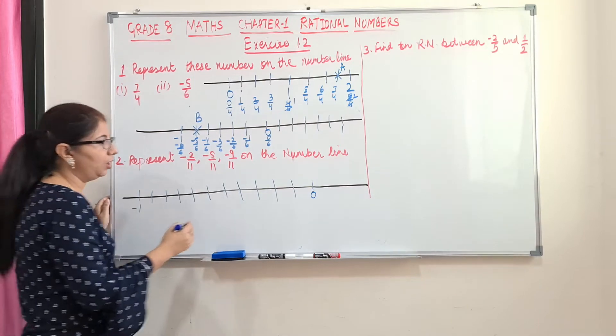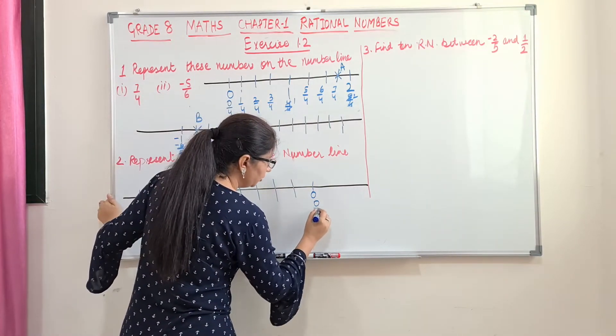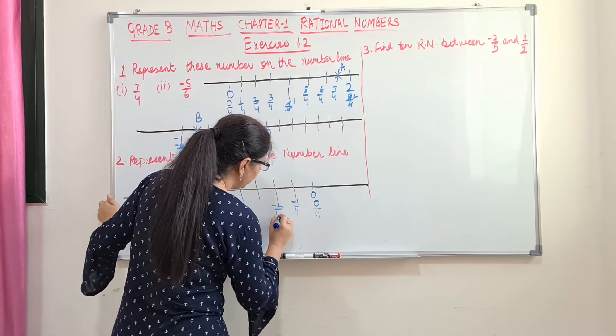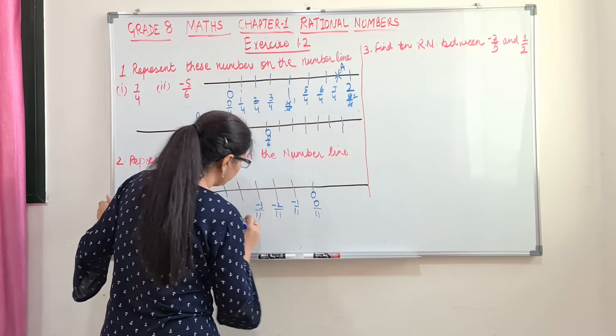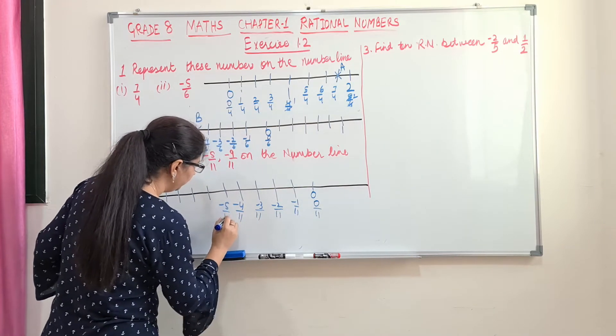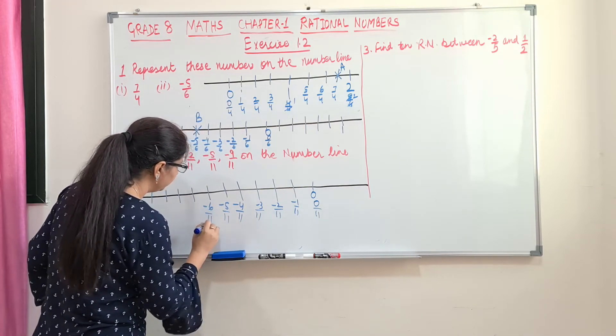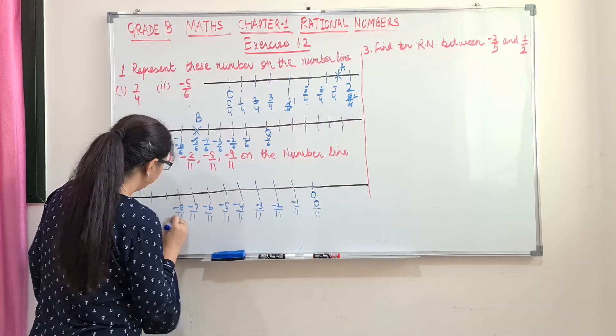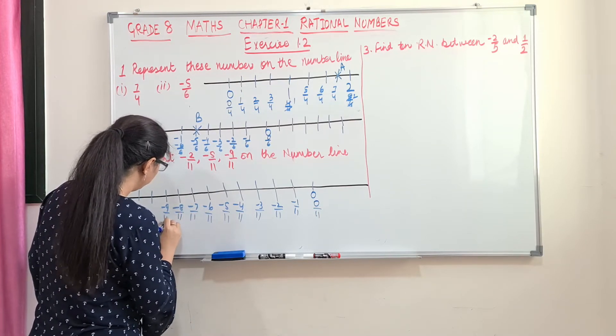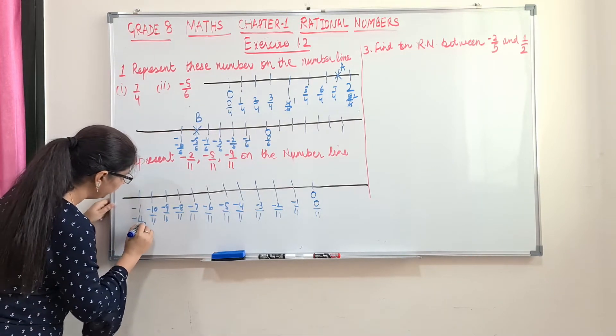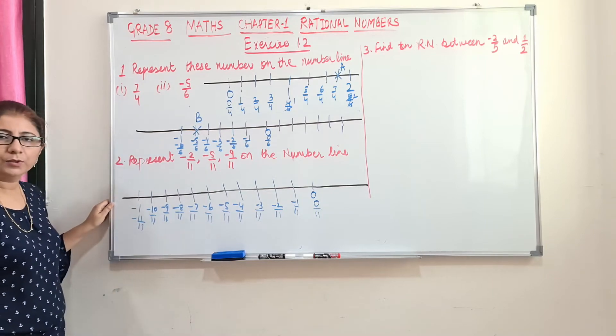So 11 equal parts. Now I will write these numbers: 0 by 11, minus 1 by 11, minus 2 by 11, minus 3 by 11, minus 4, minus 5, minus 6, minus 7, minus 8, minus 9, minus 10 and then minus 11.